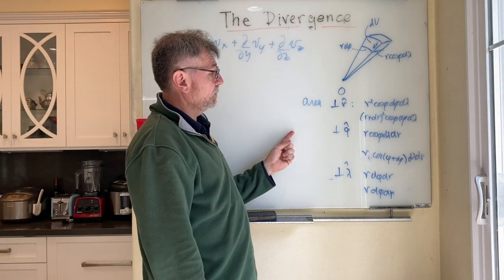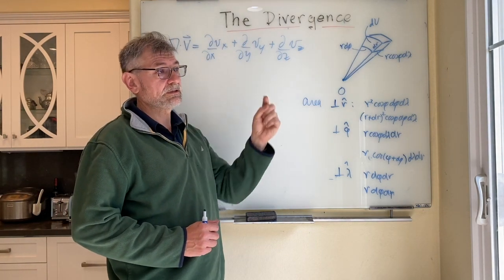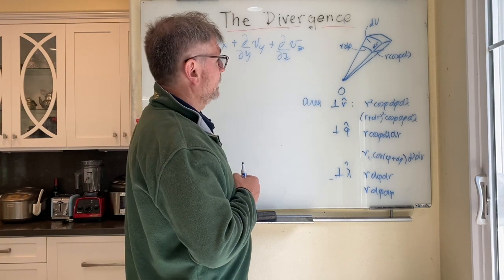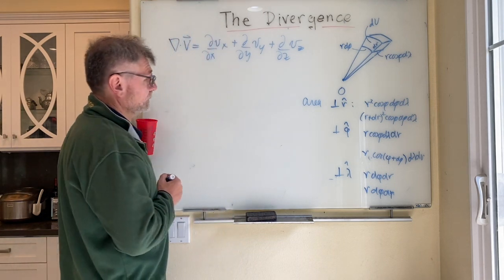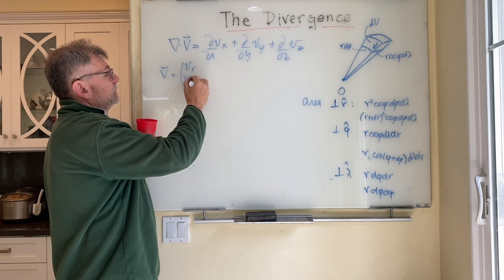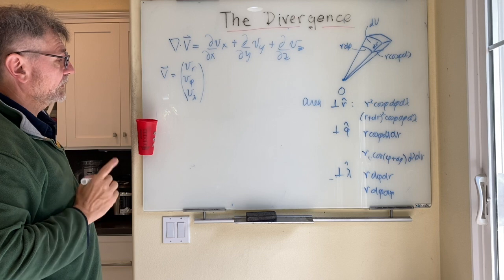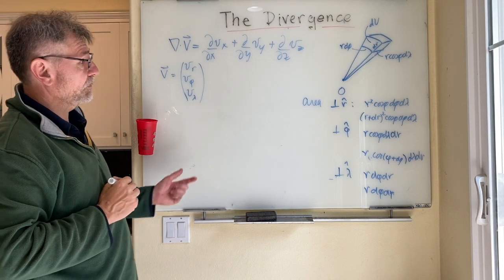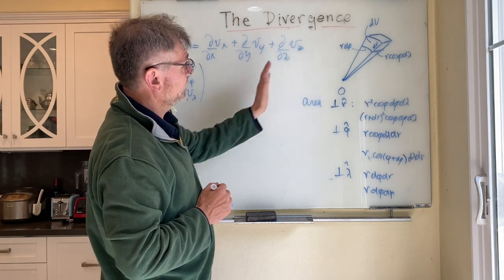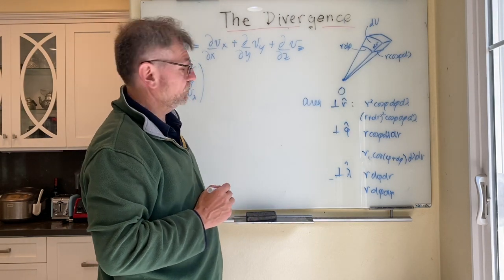We can now break our vector v into three components: a component in the radial direction, a component in the phi direction (latitude), and a component in the lambda or longitudinal direction. So v will be written as vr, v phi, and v lambda. Now if we calculate the divergence, we will take one over the volume element times the sum of the surface fluxes through the six sides of that little control volume.